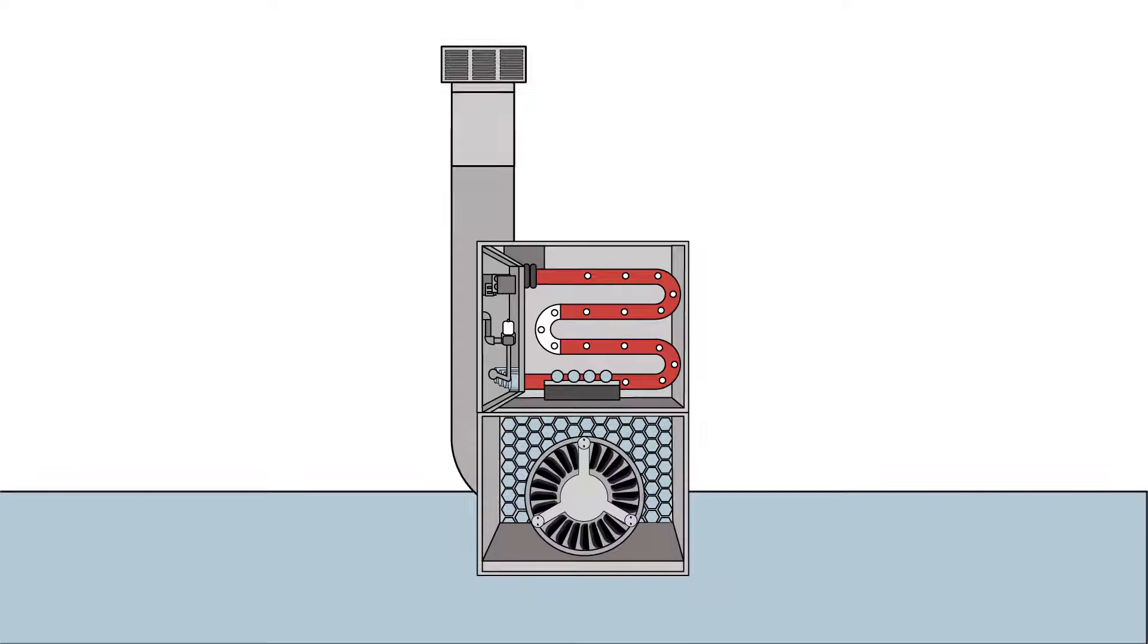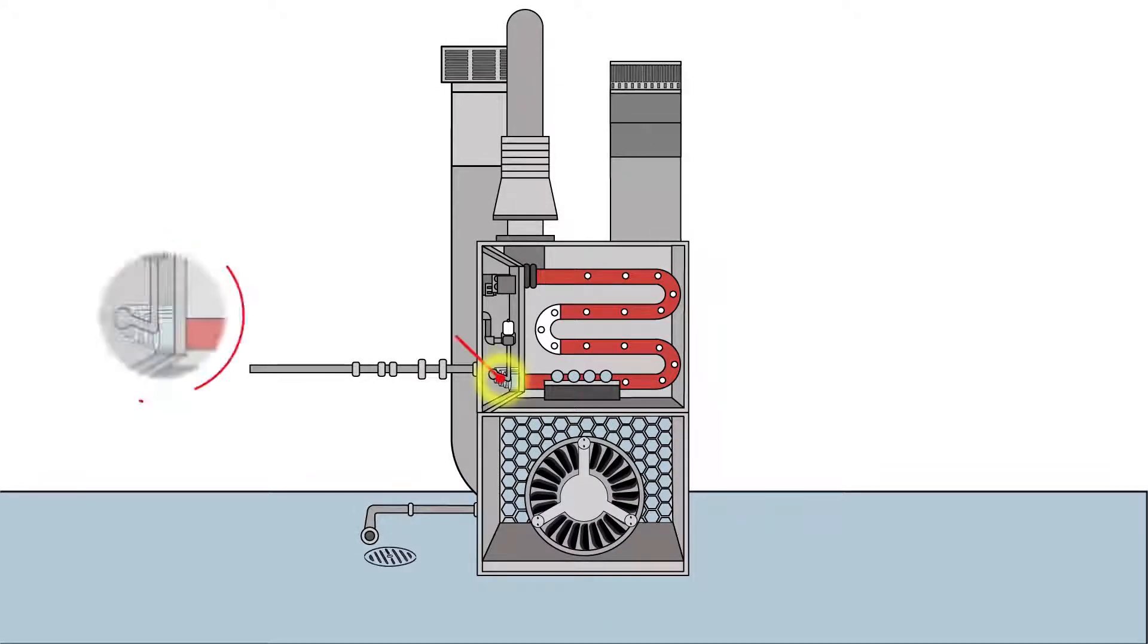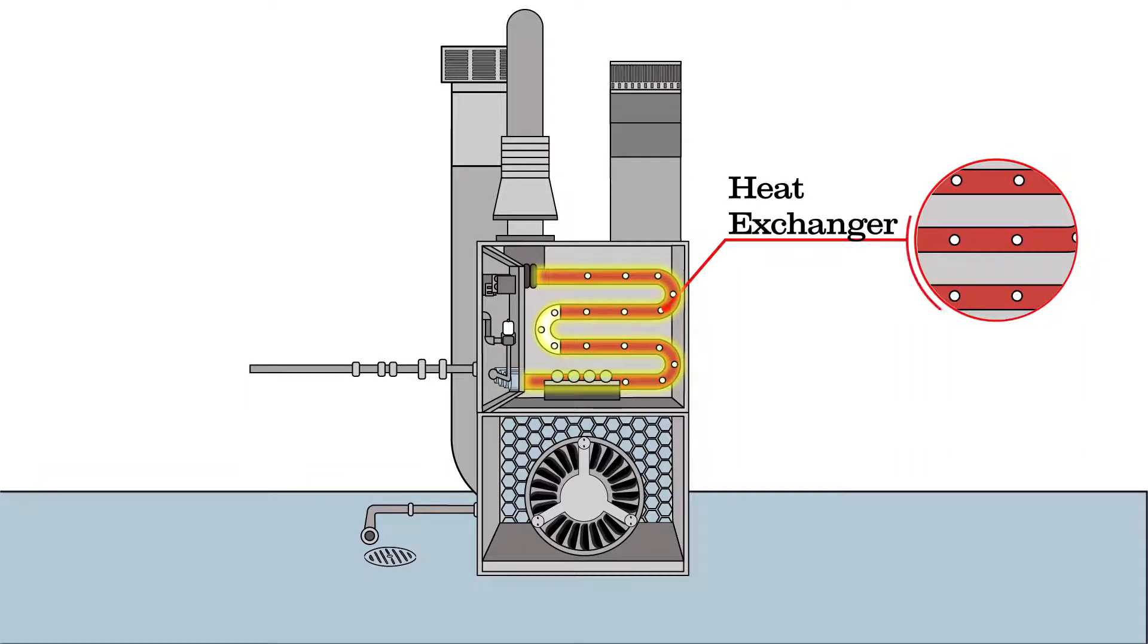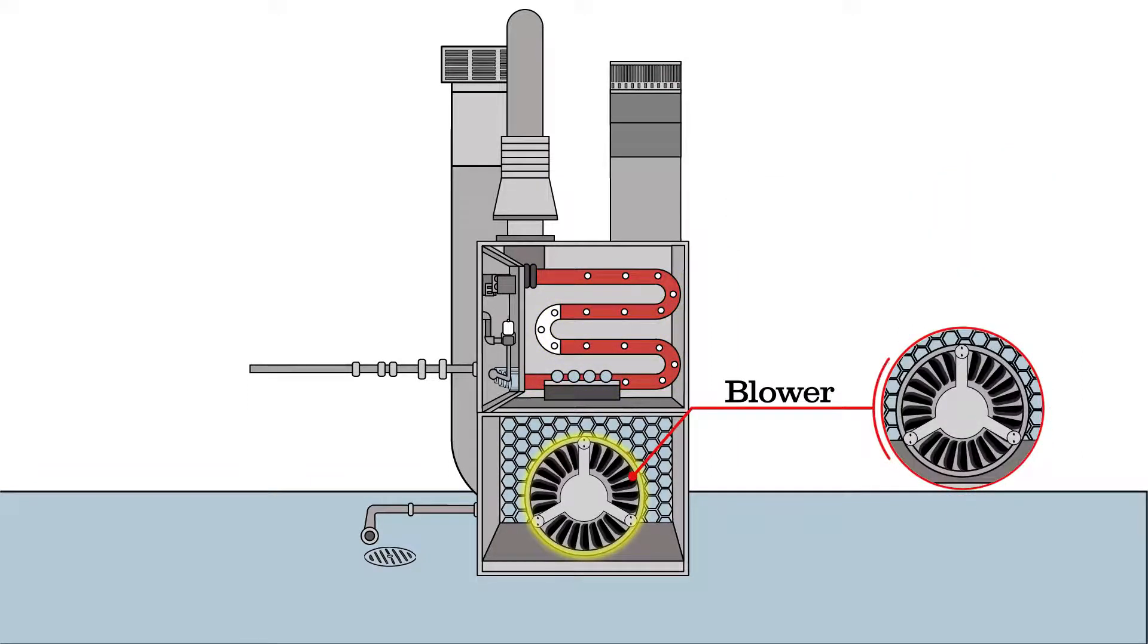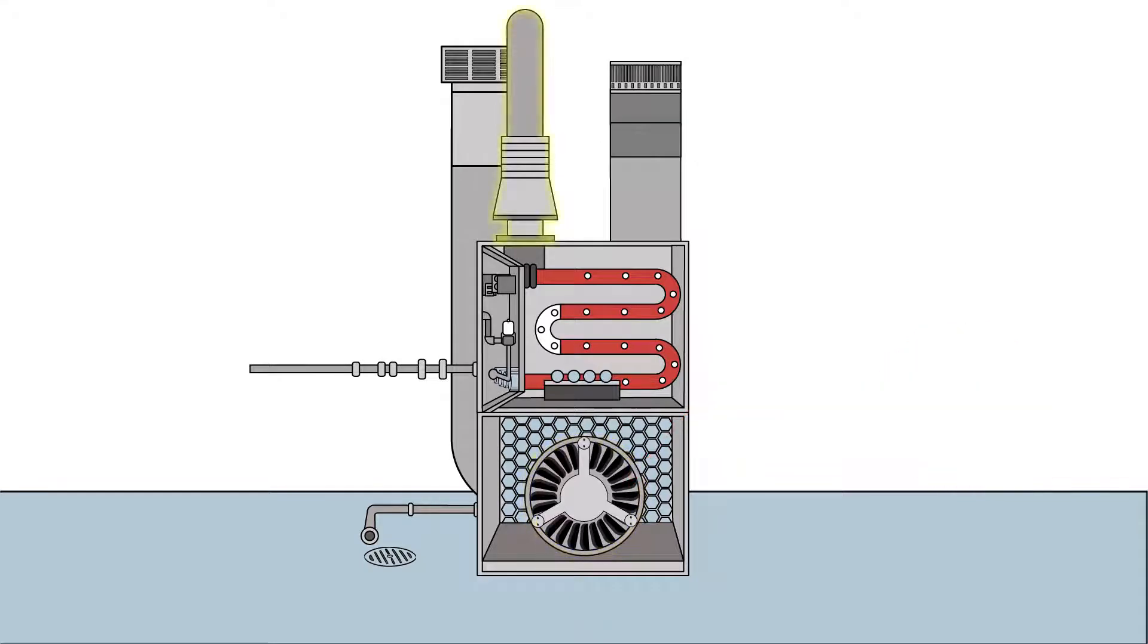All furnaces consist of four main parts: burners that deliver and burn fuel, heat exchangers that keep your breathing air and the combustion process separate, a blower that circulates heat through the furnace and distributes it throughout the house, and a flue that releases gaseous byproducts outside.